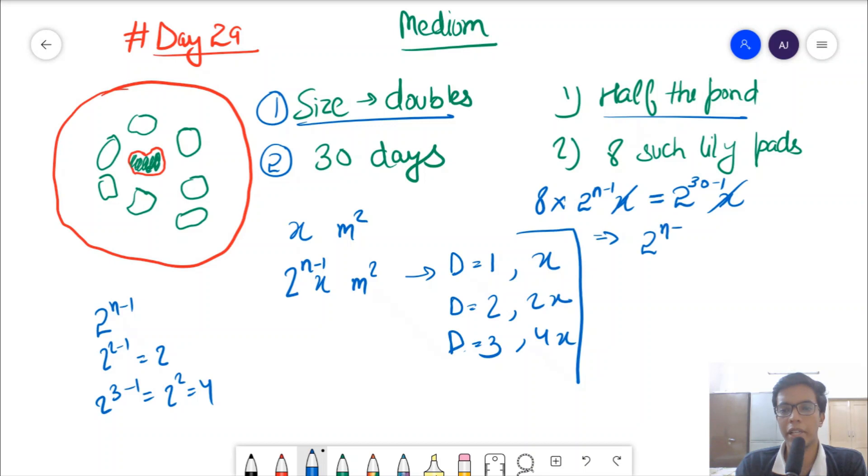So 2 power n minus 1 is 2 power 29 upon 8, that is 2 power 29 upon 2 power 3, which is law of exponent simple, 29 minus 3, which is 2 power 26. Hence n equals 26 plus 1, that is 27. Simple.